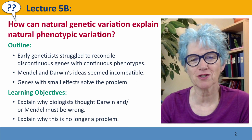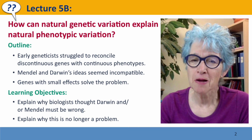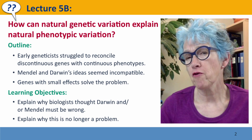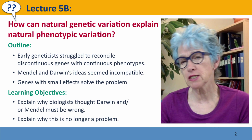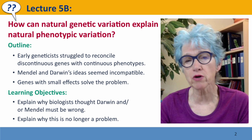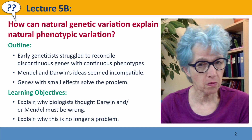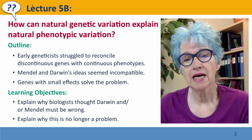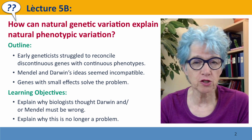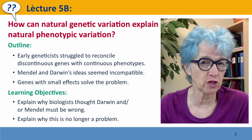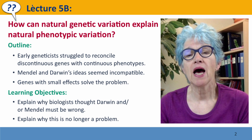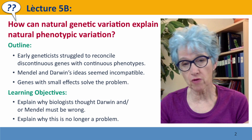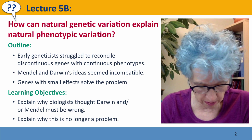Hi everyone, welcome back to Useful Genetics. This is lecture 5b, where we're going to take, for once, a somewhat historical view of a problem — the problem being how to reconcile the discontinuous nature of genetic variation with the continuous nature of natural phenotypic variation.